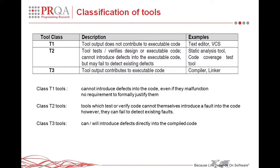This is a significant risk with T2 tools, that they create a false sense of confidence and that developers will wrongly assume that the tool will detect something, and therefore don't have any other mechanism in place to catch the defect. That's the importance of having tools that you use justified.